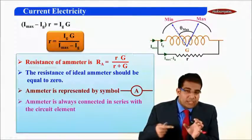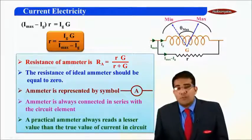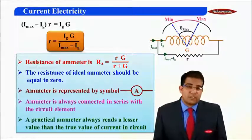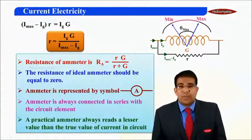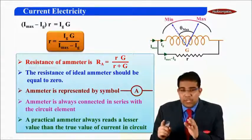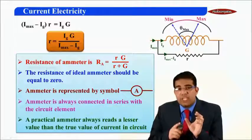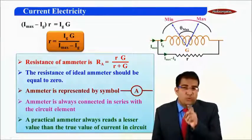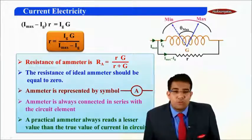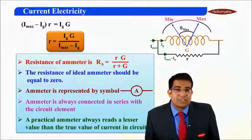The ammeter is always connected in series with the circuit element, so that the current enters the ammeter. Finally, a practical ammeter always reads a lesser value than the true value of current in the circuit — it will not give a true reading but a lesser one. I will explain this with examples in the upcoming module. I hope you have understood this module; we will meet in the next one. Have a good day, thank you.